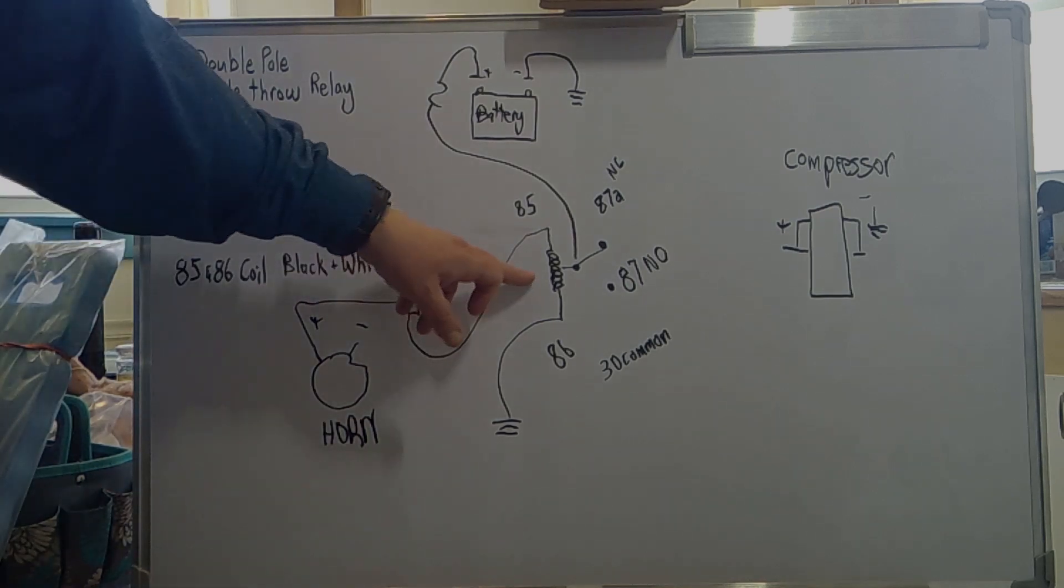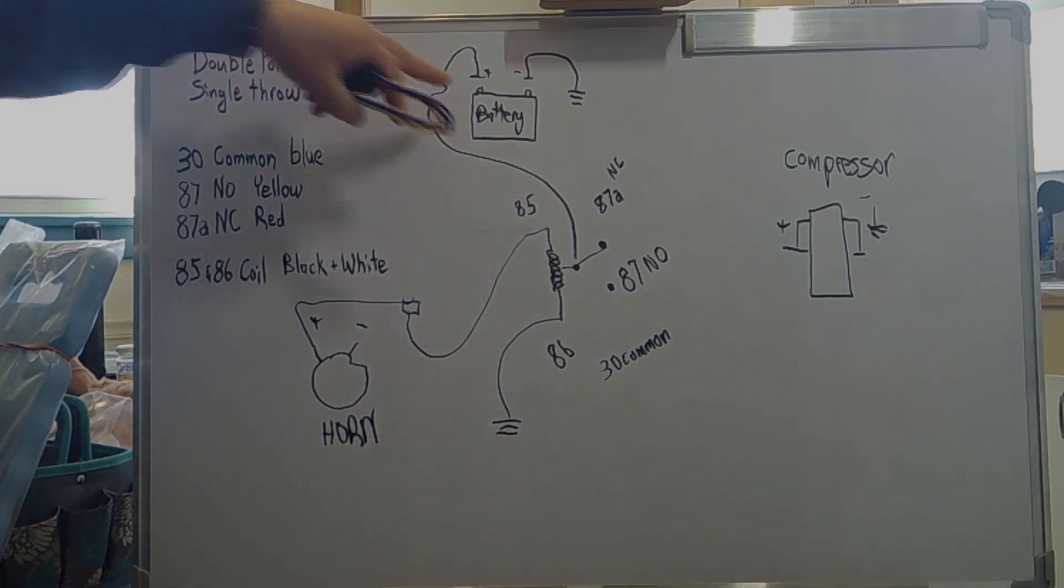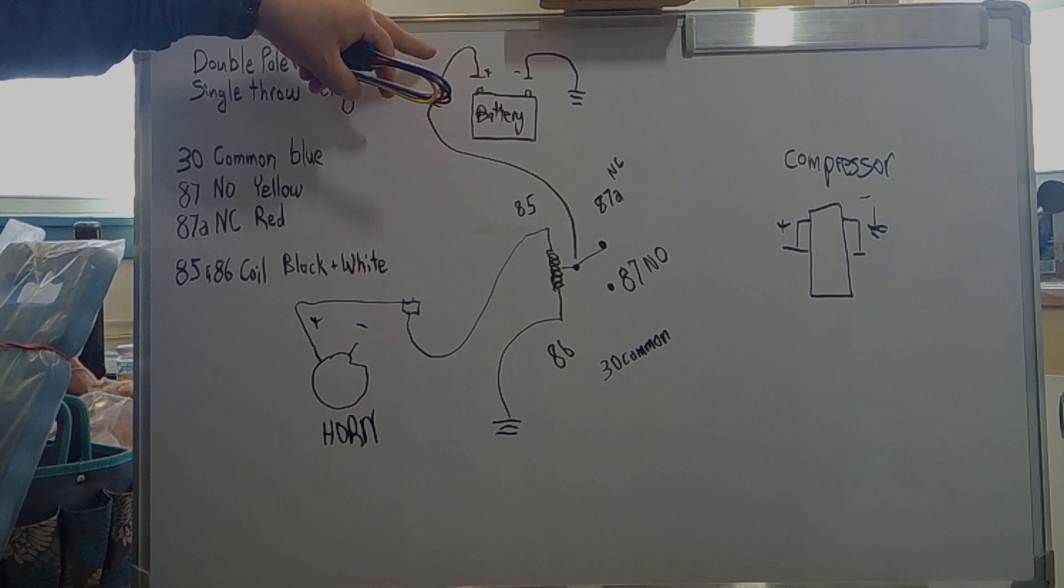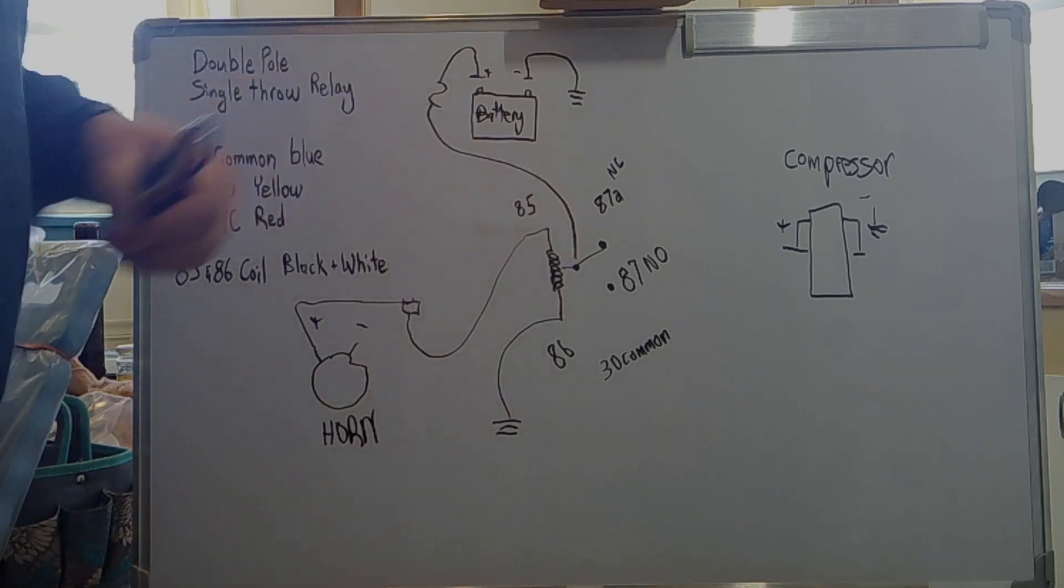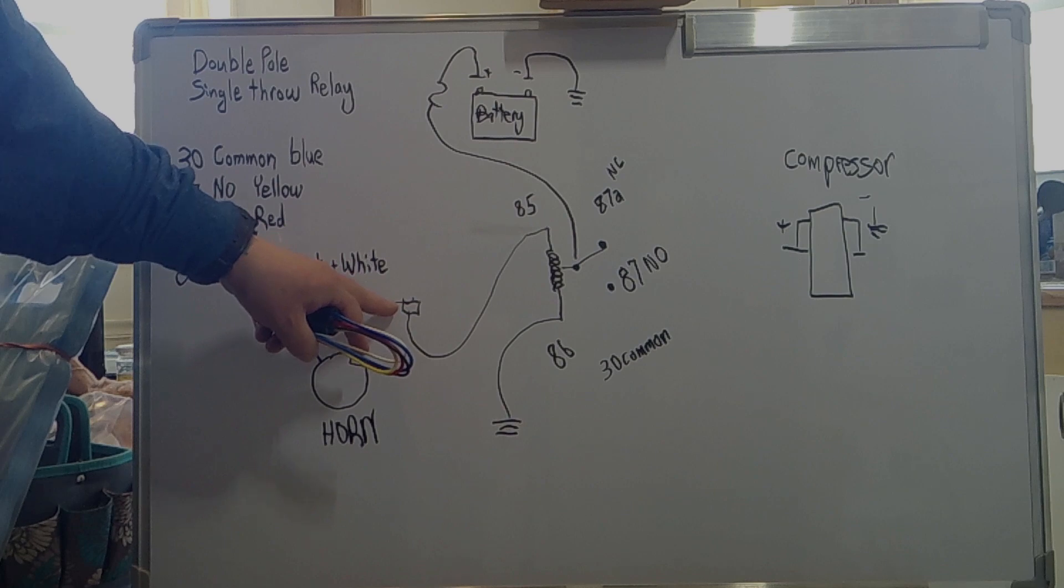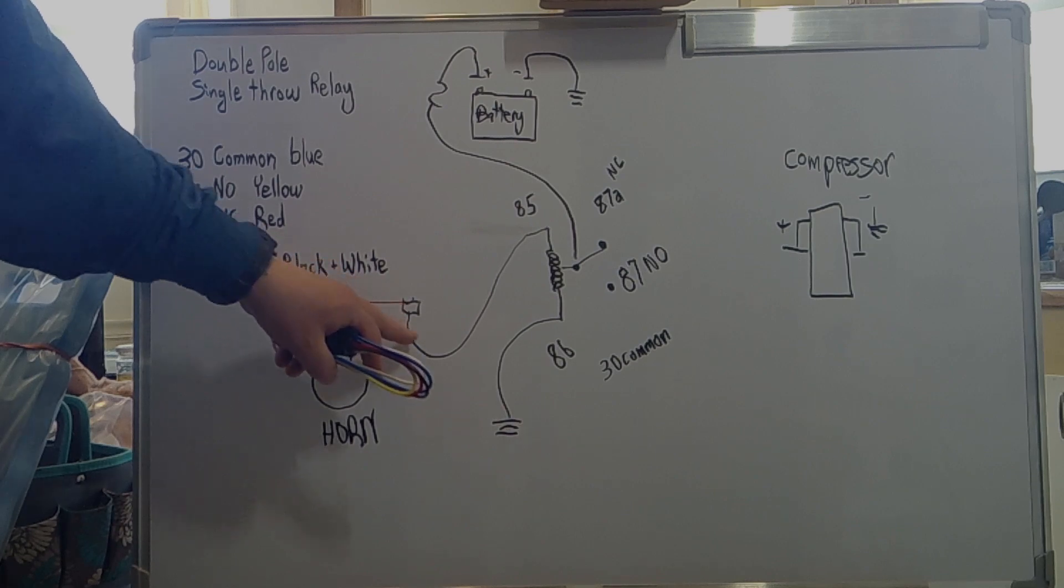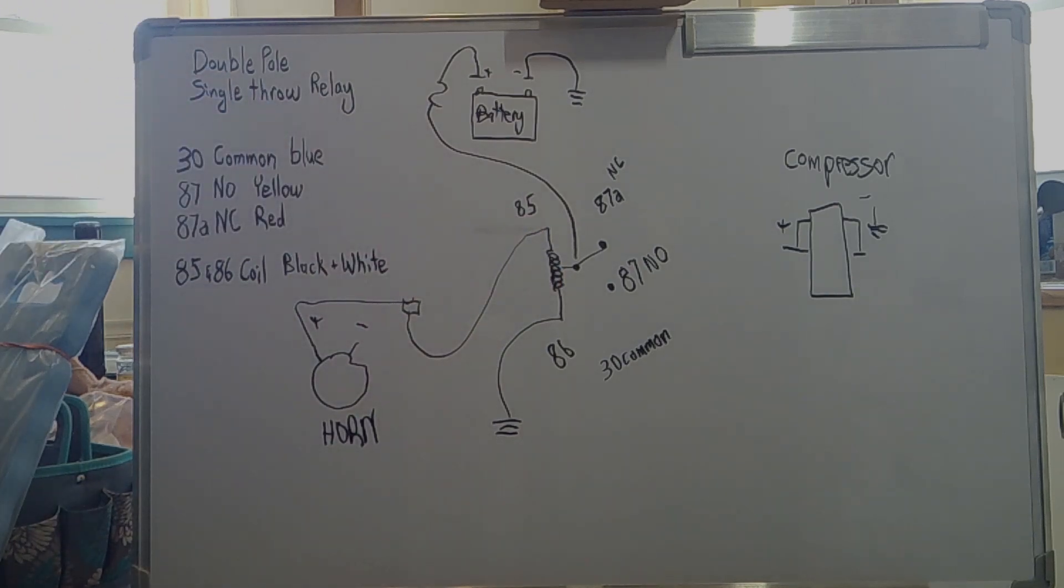Now what I did is I went from my battery positive with a fused link. I had a fuse there going into pin 30 to my common. Then I used a tap into my wired, my hot side of my horn circuit. I put a wire tap in there and ran to pin 85 on my coil. And then on pin 86, the white one, I ran to body ground.